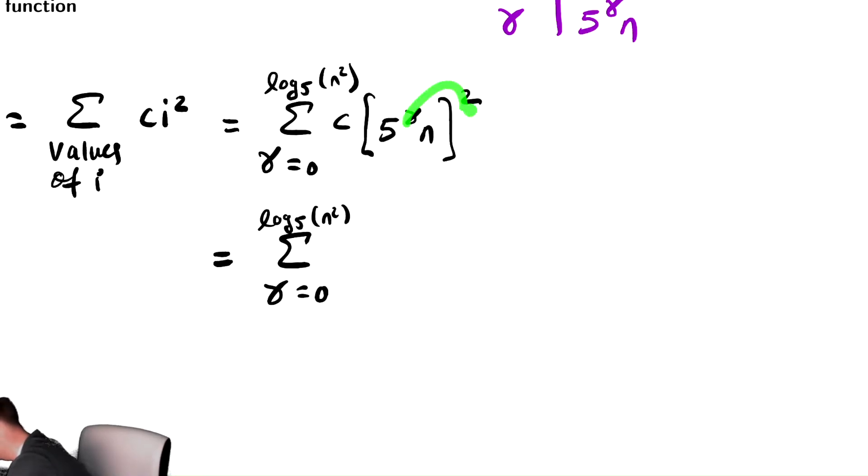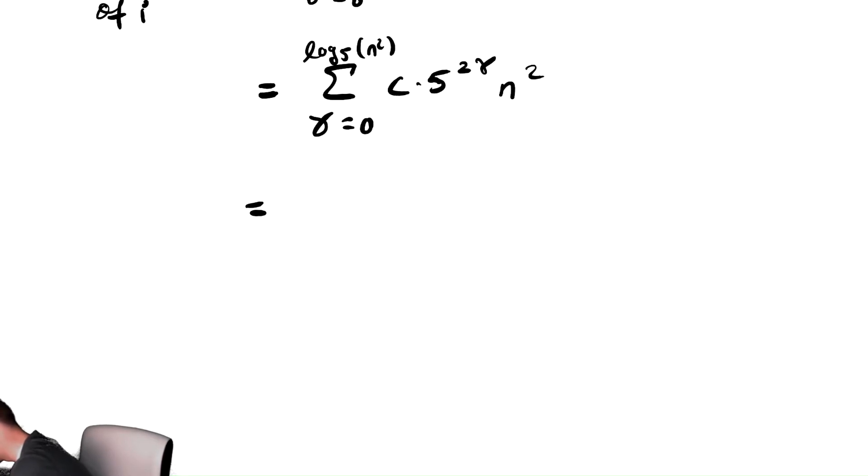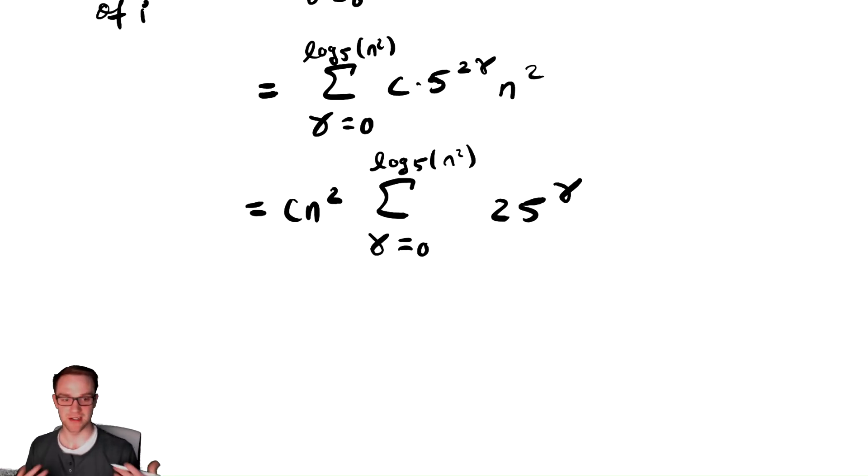We do gamma equals zero to log base 5 of n squared. I'm squaring a multiplication, and you can write that as both parts squared separately. So this is times 5 to the 2 gamma n squared. I can rewrite this as cn squared by factoring that out, the sum from gamma equals zero to log base 5 of n squared, of 5 to the 2 gamma, which I can write as 25 to the gamma. When you have multiplication in the exponent, you can just do the exponents in either order. So we do 5 to the 2 to the gamma, which is 25 to the gamma.